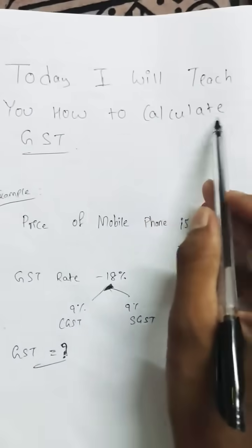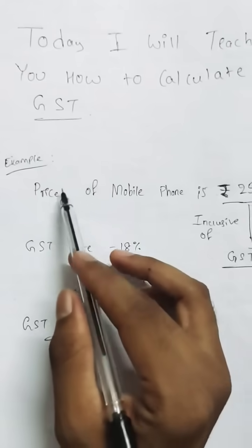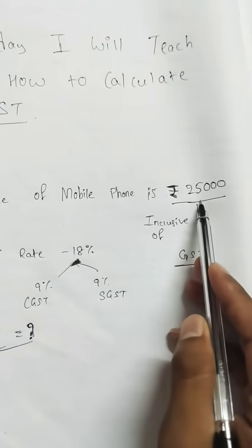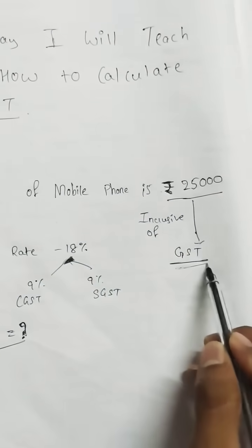Today I will teach you how to calculate GST. Let us take an example. Assume that the price of a mobile phone is ₹25,000. It is inclusive of GST.